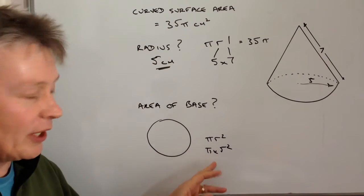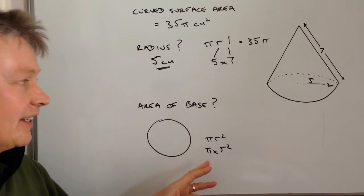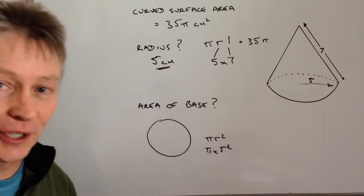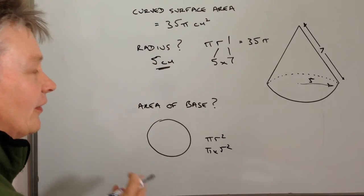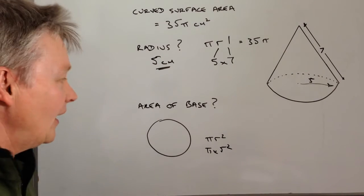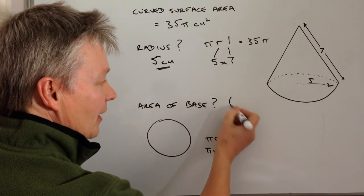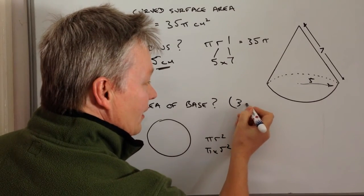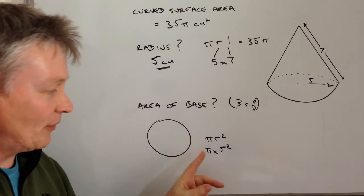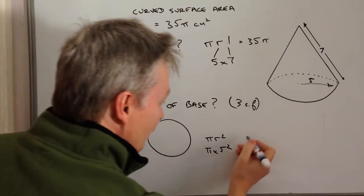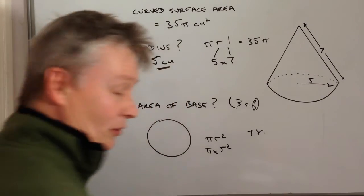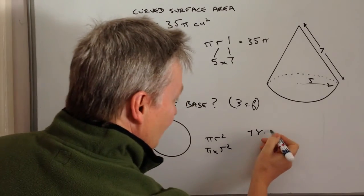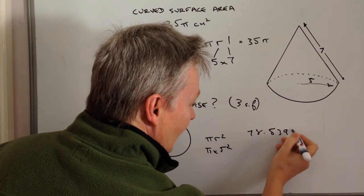Now you can actually write that as 25π centimeters squared, or you can put in the calculator because the main thing is, on the question it asks you to work out the area of the base, and the telling bit is it says to 3 significant figures. So if you pop that in a calculator that's going to give you 78 point, I'm just going to check this, 5, 3, 9, 8.